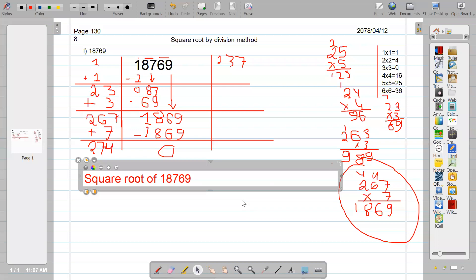One, 18,769 is equals to, that is your answer: 137. One, three, seven.